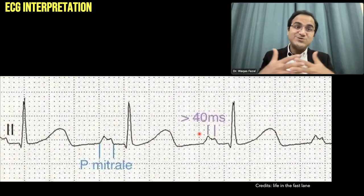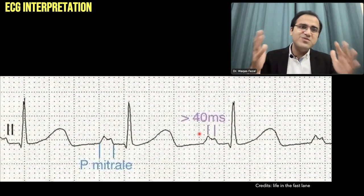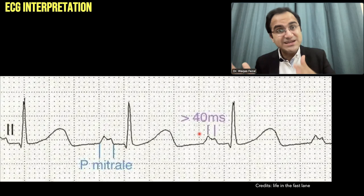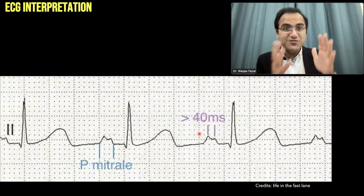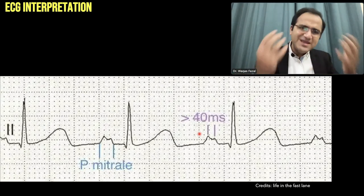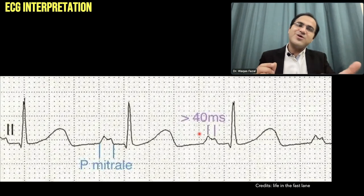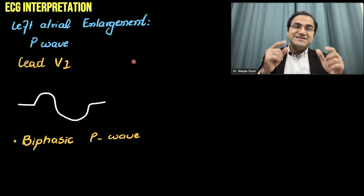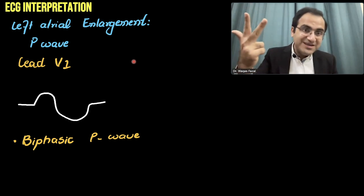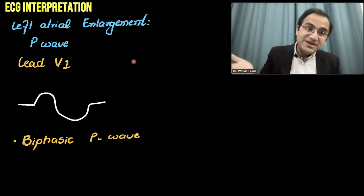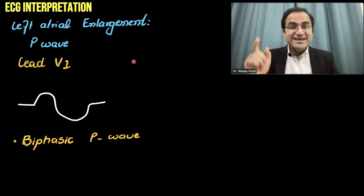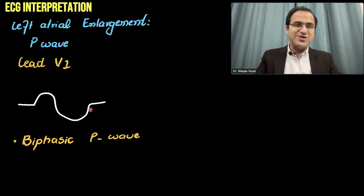The ECG shows so many things. Each and every pathology can cause a change in the electrical currents, and if you master the ECG, there are many things you can easily catch. P mitrale is seen in leads 1, 2, or 3. There are some changes that are different in lead V1. In lead V1, you will see a biphasic P wave.